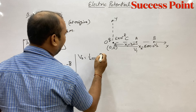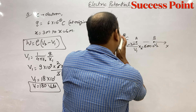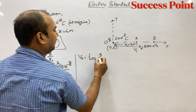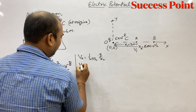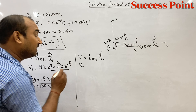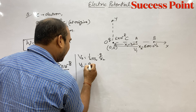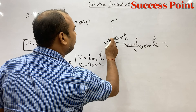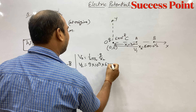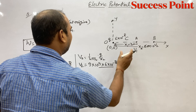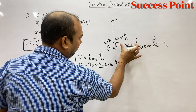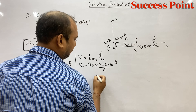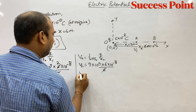Ab likhenge V2 ki value find karenge bacho. V2 = (1/4πε₀) × Q/R2. Yahan pe potential nikalna hai Q upon distance hota hai R. To V2 barabar = 9 into 10⁹ × 6 into 10⁻⁸ upon R2, which is x2 = 6 meters. 6 and 6 cancel ho gaya, so V2 = 90 V.